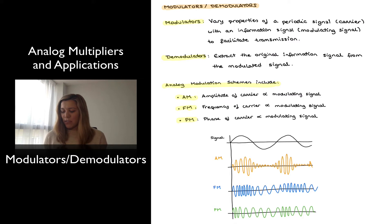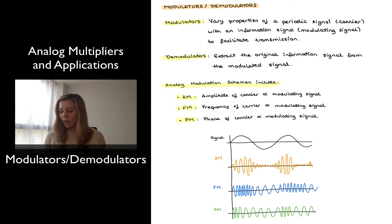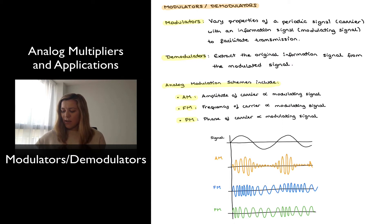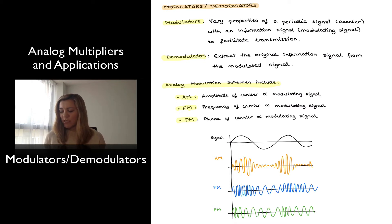We can see out of these modulation schemes — I've represented roughly the modulated signals coming out of the three modulating schemes. If the original signal is the one at the top, it's just a regular sinusoidal signal. In the case of amplitude modulation, we will have a faster varying or higher frequency carrier signal whose amplitude is being modulated following the information signal. In the case of frequency modulation and phase modulation, the envelope of the signal is constant — what's being varied is not the amplitude of the carrier signal, but rather the frequency in the case of FM or the phase in the case of PM.